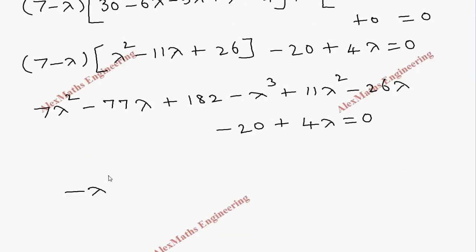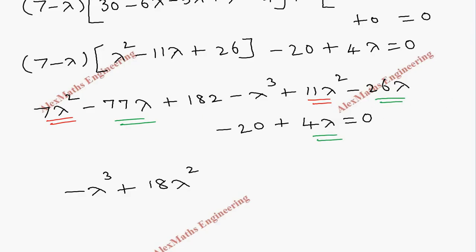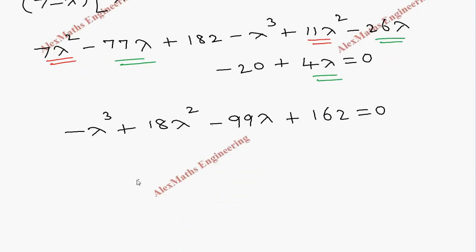Now grouping terms: minus lambda cubed, then the lambda squared terms, then the lambda terms give minus 99 lambda, and the constant 182 minus 20 gives 162, equal to 0. Changing signs throughout: lambda cubed minus 18 lambda squared plus 99 lambda minus 162 equal to 0.